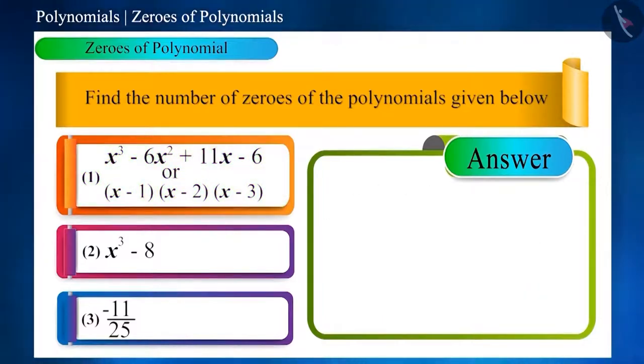And if we equate polynomial of the second option to 0, then we get x³ - 8 = 0. That is, x³ = 8. That is, x = 2. This polynomial has only one zero.